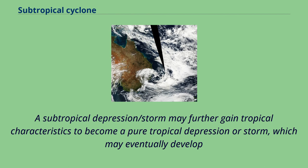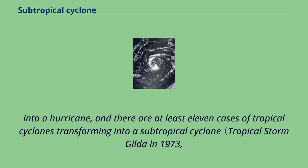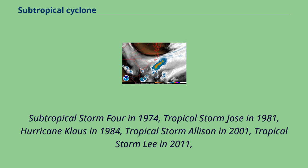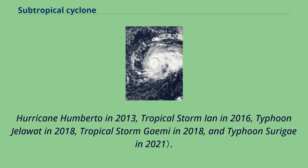A subtropical depression or storm may further gain tropical characteristics to become a pure tropical depression or storm, which may eventually develop into a hurricane. There are at least 11 cases of tropical cyclones transforming into a subtropical cyclone: Tropical Storm Gilda in 1973, subtropical storm 4 in 1974, Tropical Storm Jose in 1981, Hurricane Klaus in 1984, Tropical Storm Allison in 2001, Tropical Storm Lee in 2011, Hurricane Humberto in 2013, Tropical Storm Ian in 2016, Typhoon Jelawat in 2018, Tropical Storm Gaemi in 2018, and Typhoon Surigae in 2021.